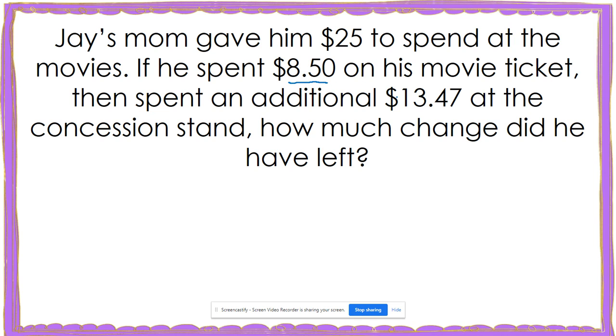He spent $8.50 on the ticket and he also spent $13.47 at the concession stand. So to figure out how much he spent, I'm going to add those numbers. So 8.50 plus 13.47. And I'm careful to make sure that I line up my decimals. Zero plus seven is seven. Five plus four is nine. I'm going to bring down my decimal. Eight plus three is 11. So I carry my one and one plus one is two. So Jay spent $21.97.